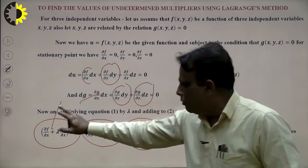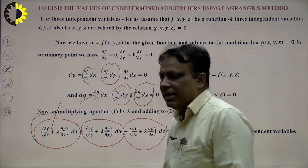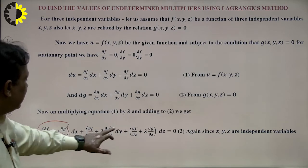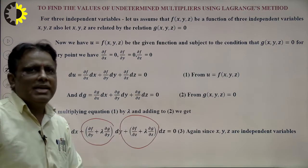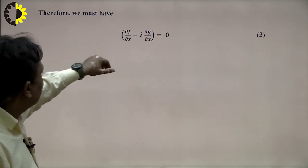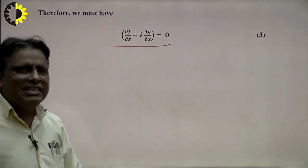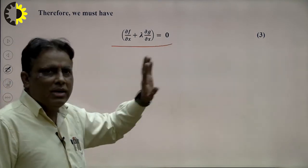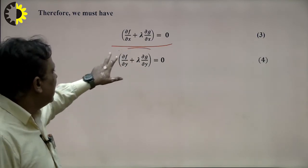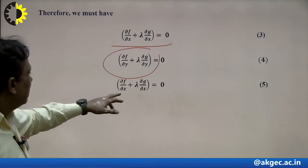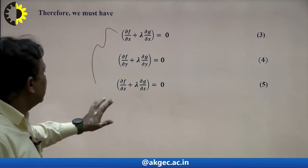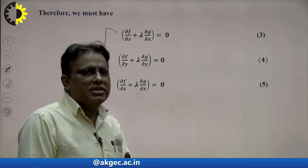The result, equating coefficients of dx, dy, dz to zero, gives the Lagrange subsidiary equations: ∂f/∂x + λ·∂g/∂x = 0, ∂f/∂y + λ·∂g/∂y = 0, ∂f/∂z + λ·∂g/∂z = 0. By solving these along with the constraint g(x,y,z) = 0, we calculate the extreme values.